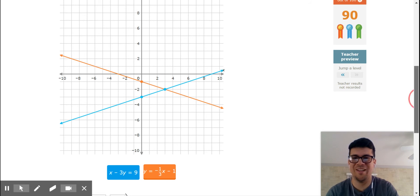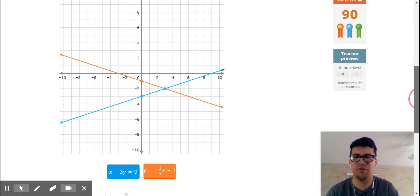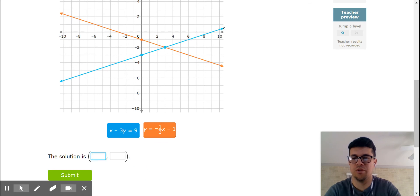So our intersection point is at (3, -2), meaning that that must be a solution to my system. (3, -2).